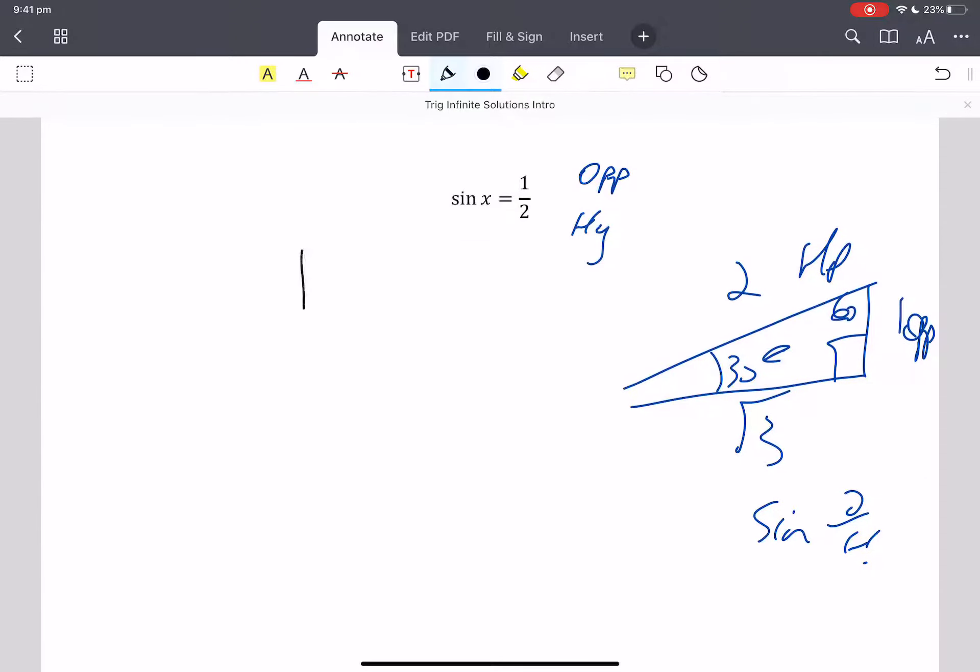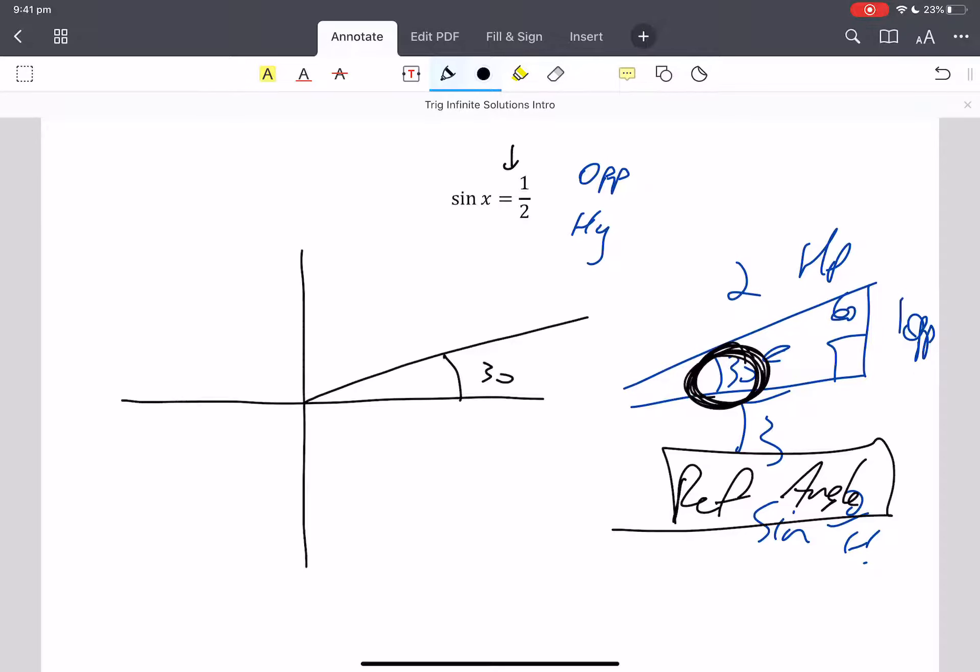But we're smart enough to go, hey, we've got this thing called a unit circle. This 30 degrees here is my reference angle. It's just one possible answer. And reference angles get drawn off the X axis. And here I've got to draw 30 degrees off the X axis. Well, that's a positive of a half. So where's sine positive? Sine is positive in Q1, quarter 1, and quadrant 2. So I've got to draw this reference angle of 30 in quadrant 1 and quadrant 2.